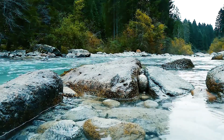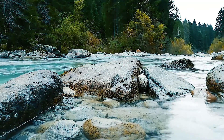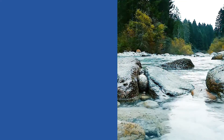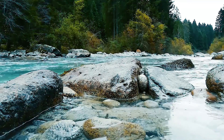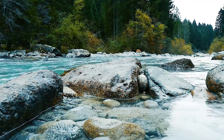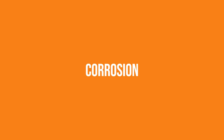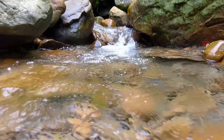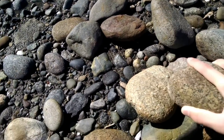How do rivers erode anything? Firstly, there's hydraulic action, which is simply the power of water. Corrosion is a chemical imbalance in the water. Attrition is the striking of material.